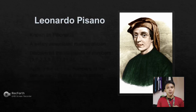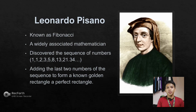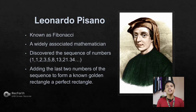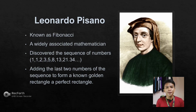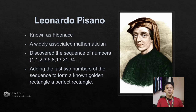He is Leonardo Pisano, known as Fibonacci — a widely associated mathematician who discovered the sequence of numbers. Based on his statement, adding the last two numbers of the sequence forms a golden rectangle, which he considered a perfect rectangle.